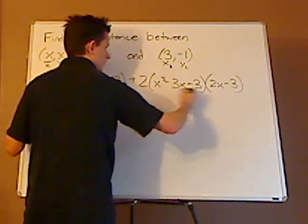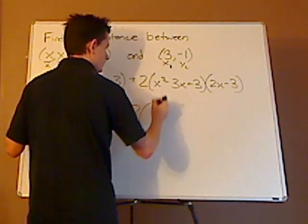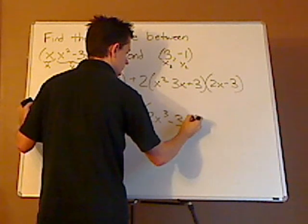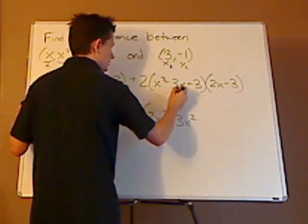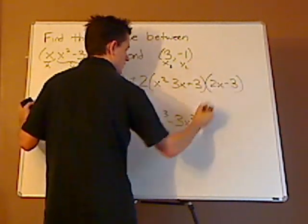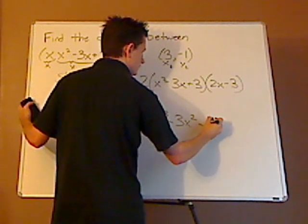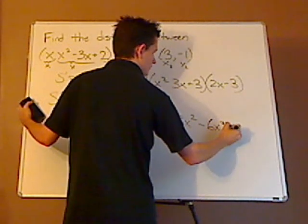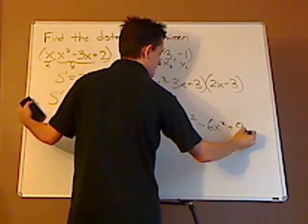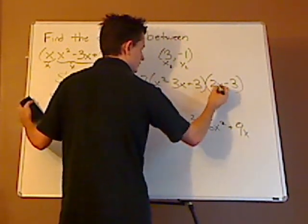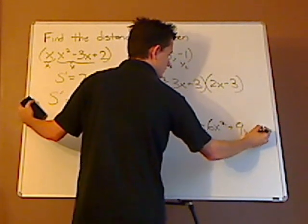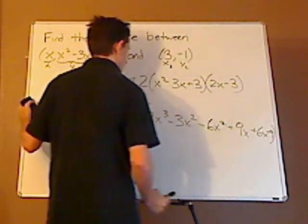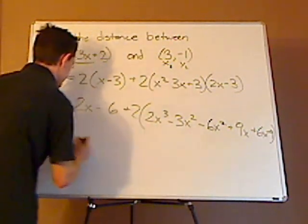Let me do this first. So this is 2x cubed minus 3x squared. Then I just show you the negative 3x, so it's negative 6x squared plus 9x. And then the 3, so it's plus 6x minus 9. And then you simplify that.